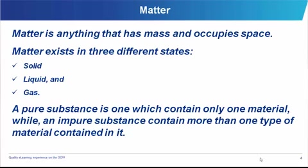Matter can be identified in three different states: the solid state, the liquid state, and the gaseous state. A pure substance is any material that only has one particular type of material embedded in it. For example, pure nitrogen, or pure air — pure air contains several different gases, but it is pure because it contains only air.